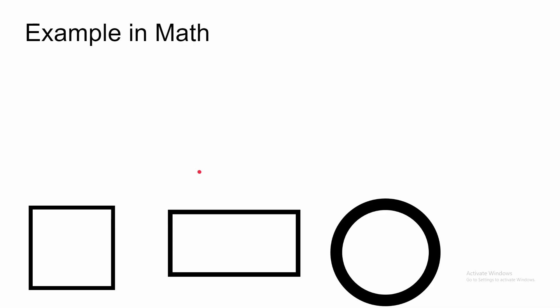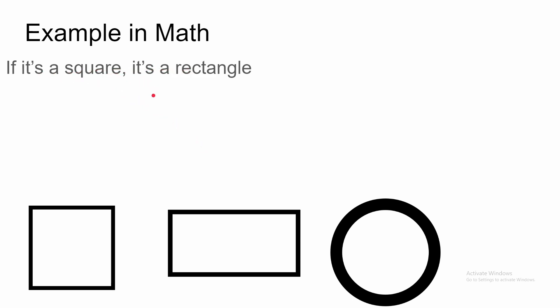So let me give you an example that's more relevant in math. If it's a square, it's a rectangle. This is a universal truth — this implication is true. If it's a square, it's a rectangle.